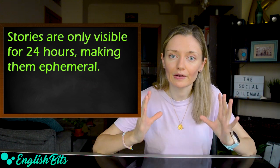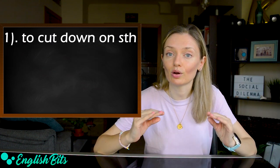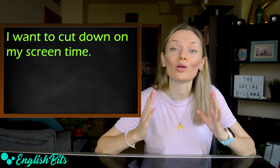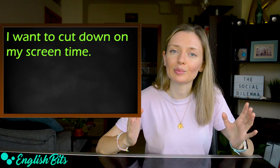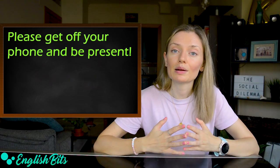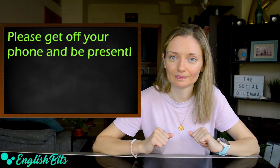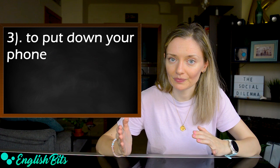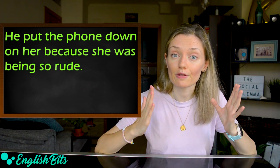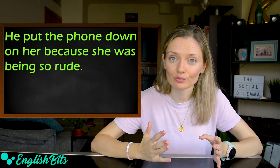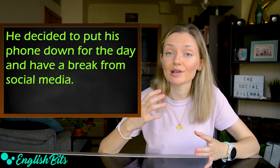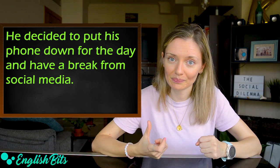Now let's learn three phrasal verbs. Number one: to cut down on something. It means to do or use less of something. For example, I want to cut down on my screen time — true story. Number two: to get off your phone. It means to stop using your phone. For example, please get off your phone and be present. And the third phrasal verb: to put down your phone. It has two meanings. The first is to hang up — for example, he put the phone down on her because she was being so rude. The second meaning is to stop using your phone — for example, he decided to put down his phone for the day and have a break from social media.